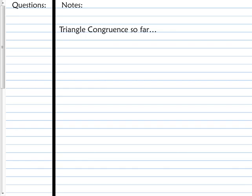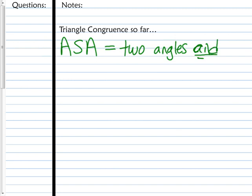So triangle congruency so far. Let's write out what we know. We know that ASA triangle congruency is two angles and the included side. And that included piece is very important. It means it's the side that is between the two congruent angles.